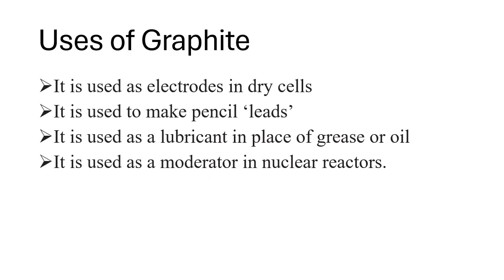Let's talk about the uses of these main allotropes of carbon. Graphite is used as electrodes in electrolysis cells, because it is a good conductor of electricity. It is used to make pencil leads. It is used as a lubricant in place of grease or oil. Another use of graphite: it is used as a moderator in nuclear reactors.